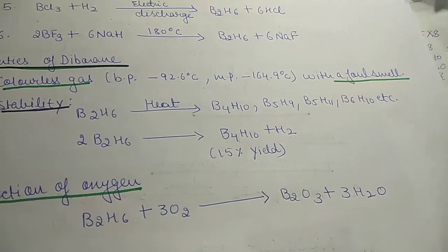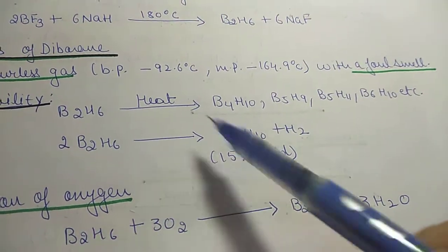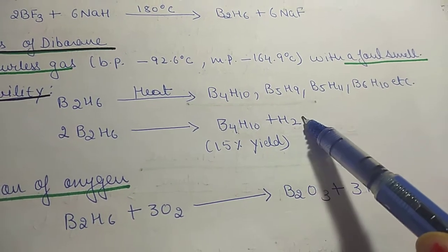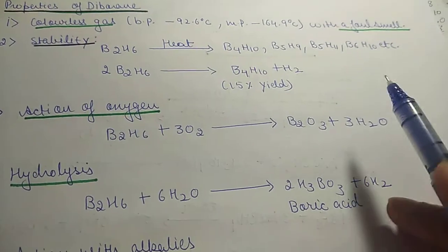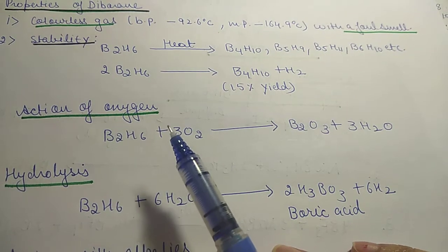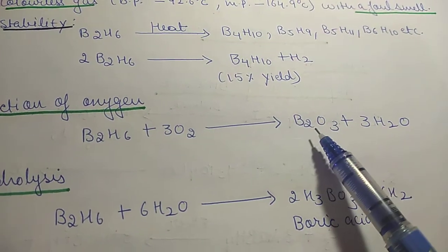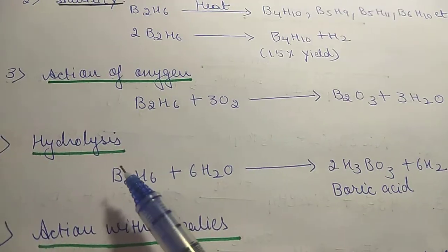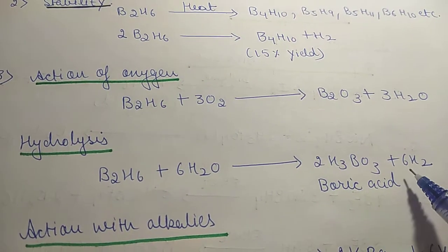Two molecules of B2H6 give B4H10 with a 15 percent yield plus hydrogen. Now its chemical properties: its action with oxygen — it reacts with oxygen to give B2O3 boron oxide plus water. On hydrolysis it gives boric acid plus hydrogen.